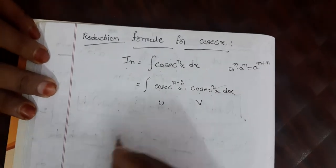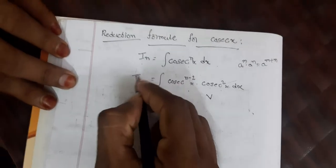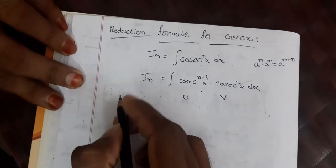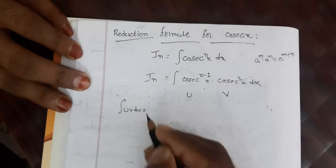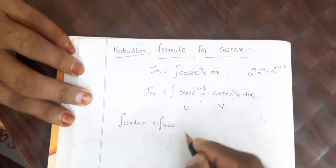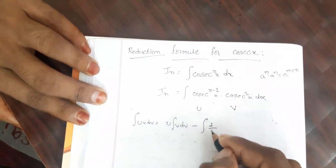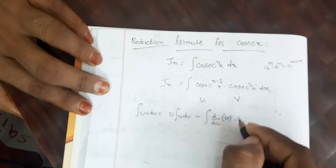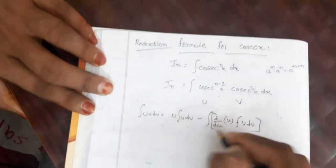So I_n equals — we apply integration by parts. The formula is: ∫u·v dx = u·∫v dx − ∫(d/dx of u · ∫v dx) dx. We'll use this integral by parts formula now.